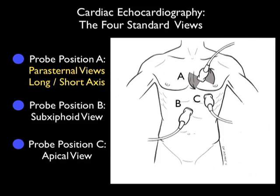The first two goals from the parasternal long axis view of the heart are: first, to look for left ventricular contractility, and second, to investigate for a pericardial effusion. Let's begin by looking at some clips going over left ventricular contractility.